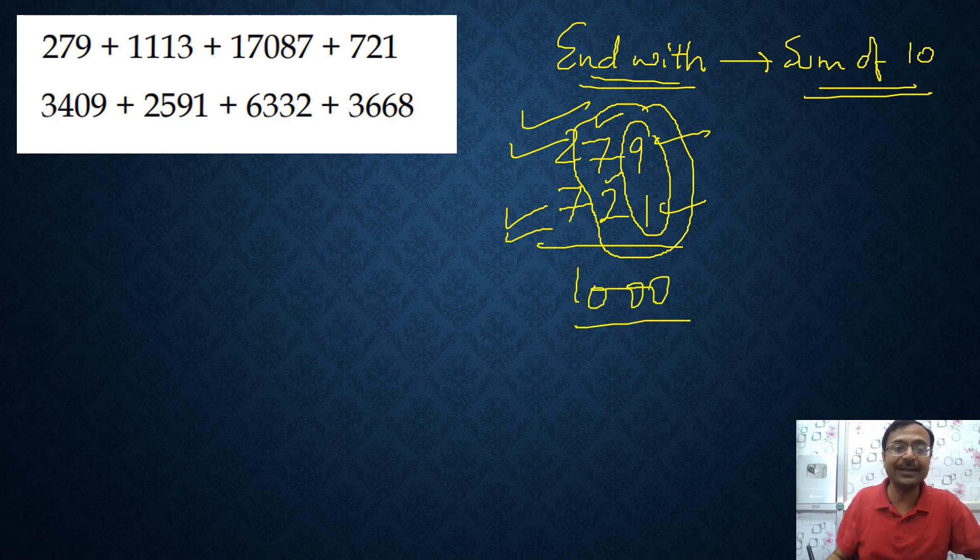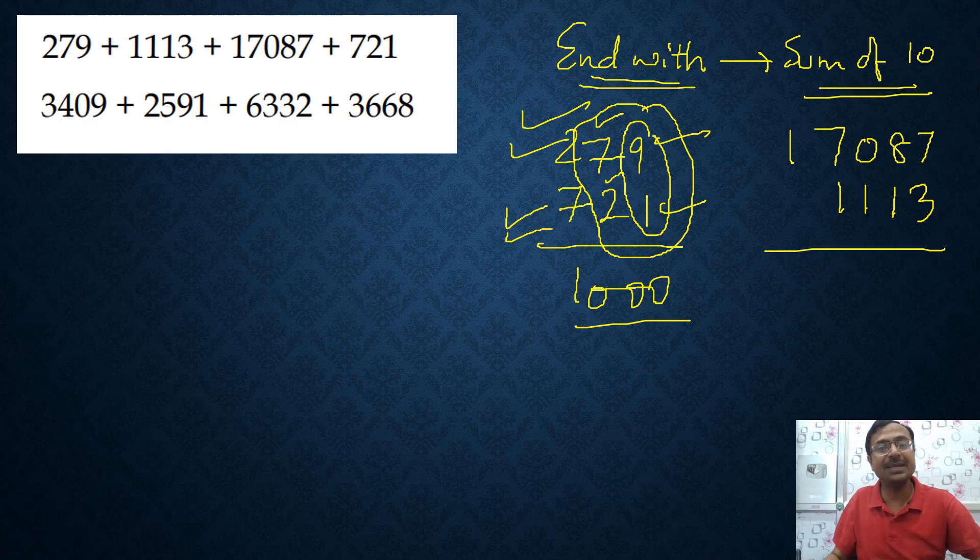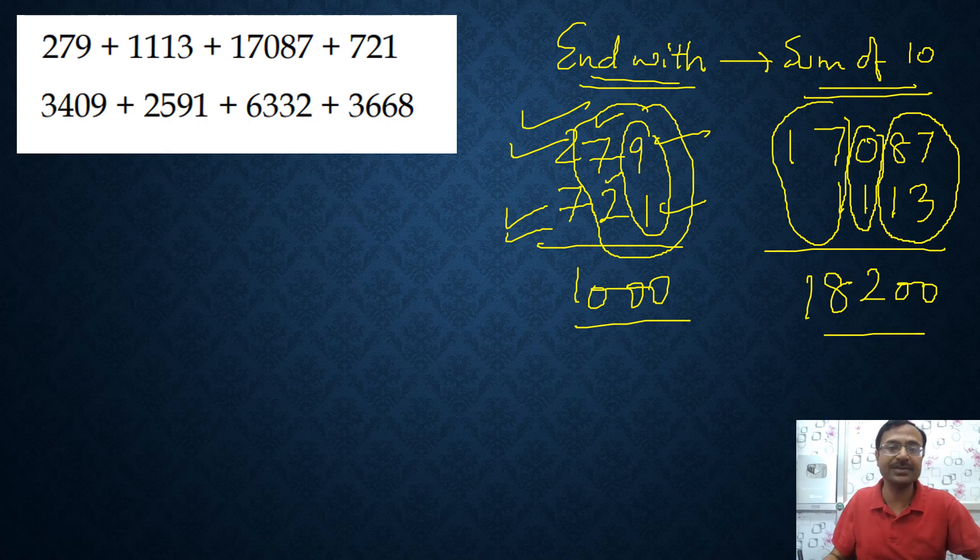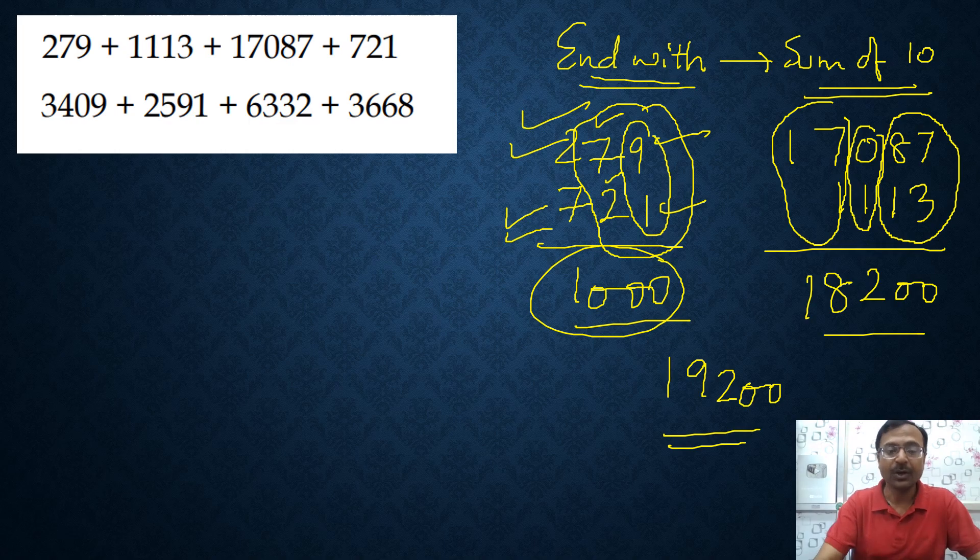Now all we have to do is add 17087 and 1113 and that also is very easy. Why? Because 87 and 13 they form 100 again. Here you have 0 plus 1 is 100, so that means you have 200 and 200 and 17 and 1 is 18. So 18200 is the result of the sum of the middle two numbers and you have 1000 here which gives you 19200 as the answer for this particular question.